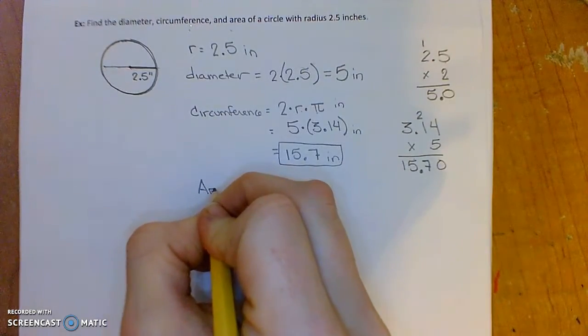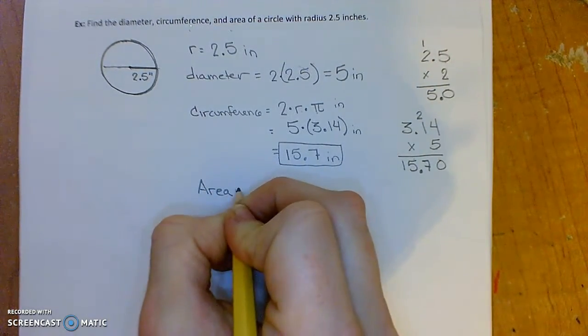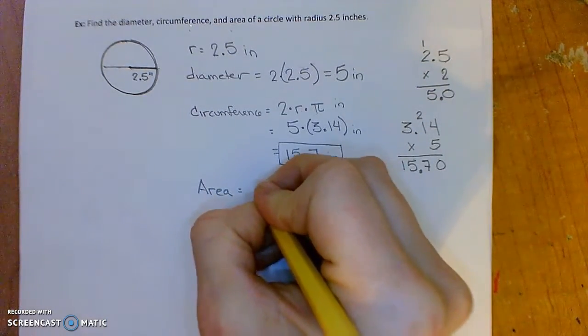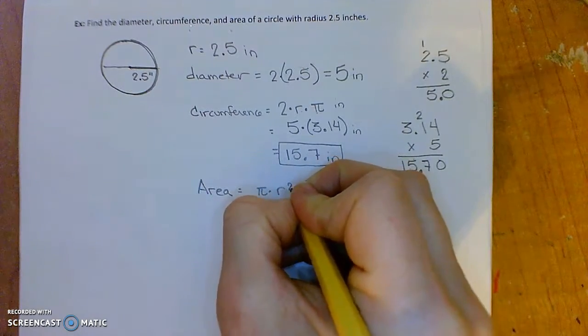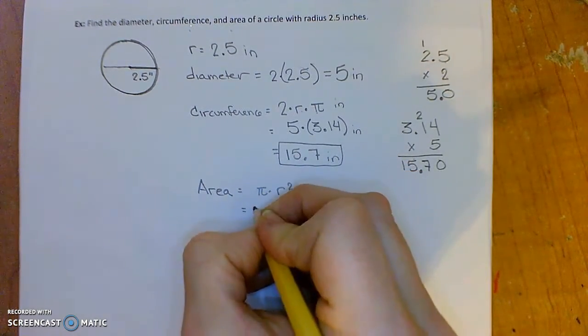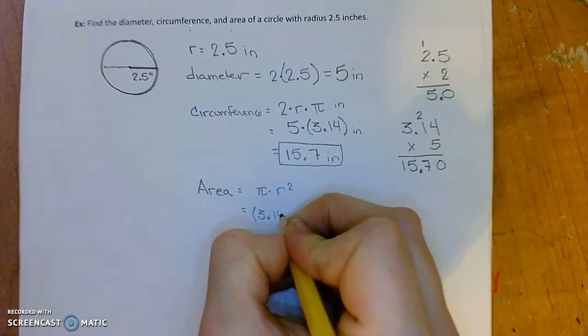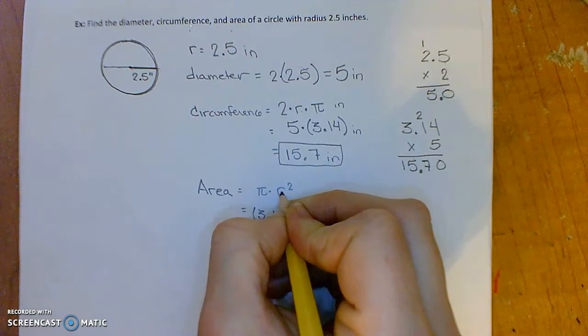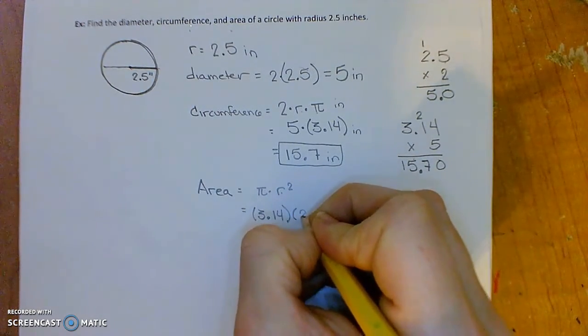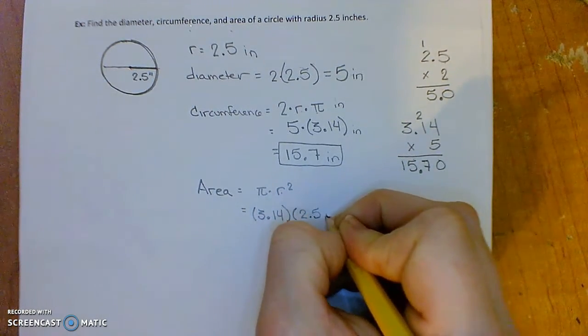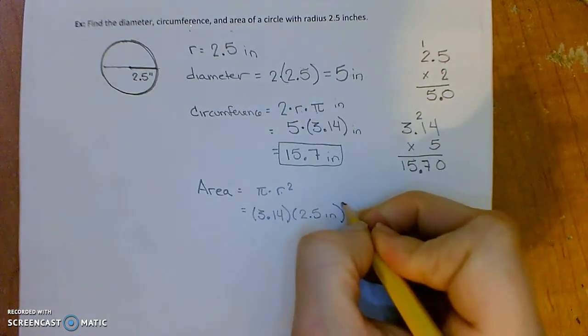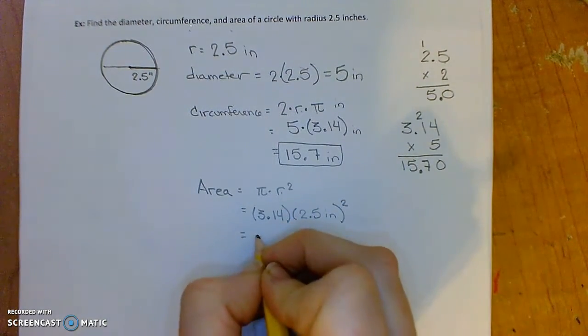Now let's talk about the area. The area will be pi times r squared. Pi, I'll use 3.14, and r, remember, was 2.5 inches, 2.5 inches squared.